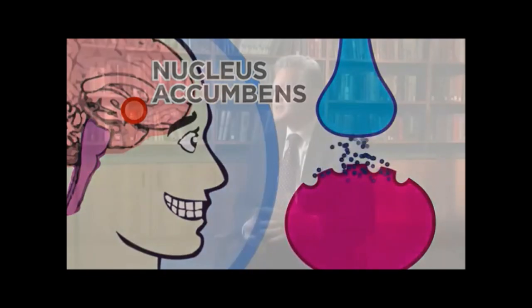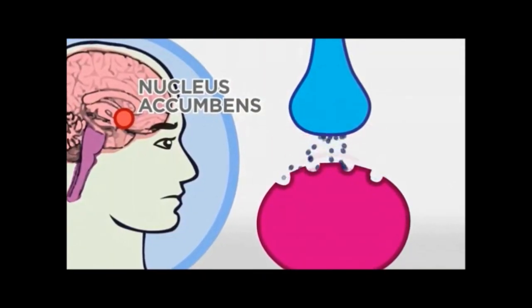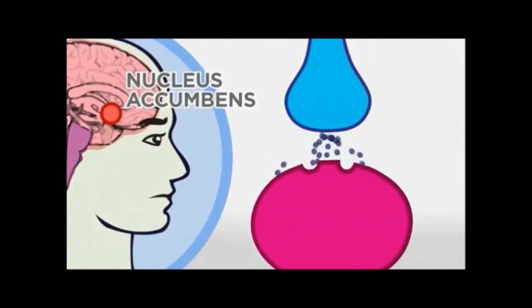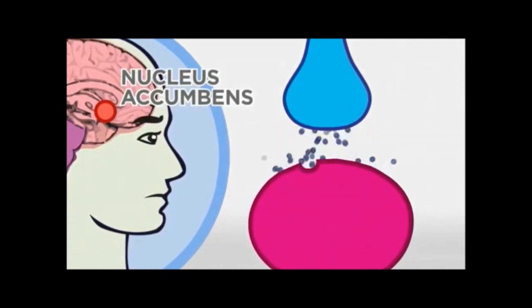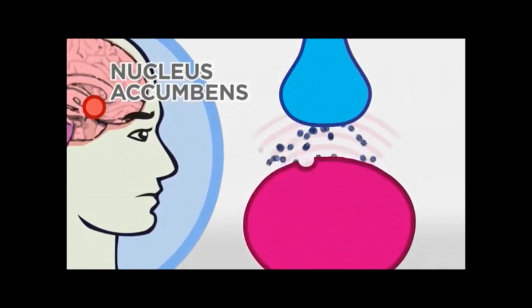In the process of going for more pleasure, we have changed our dopamine system. One of the keys to addiction is the idea that after stimulating that system chronically, again and again, and it takes three weeks to do this, the receptors for the dopamine signal now downregulate. Now there are fewer of them.